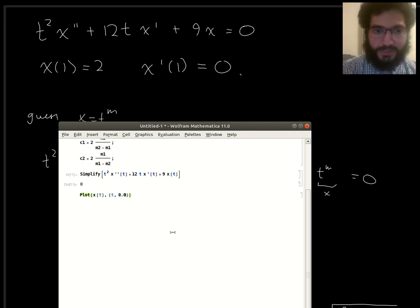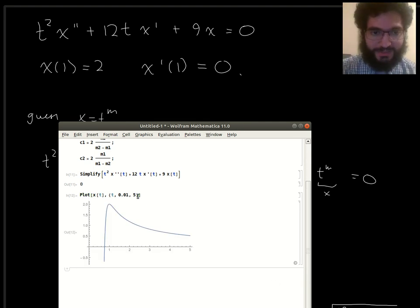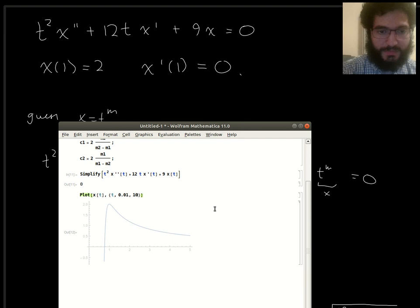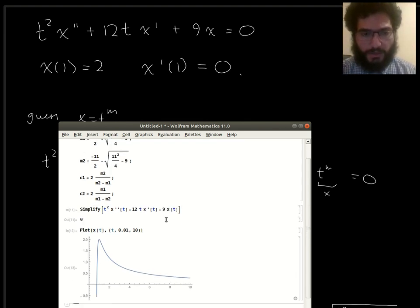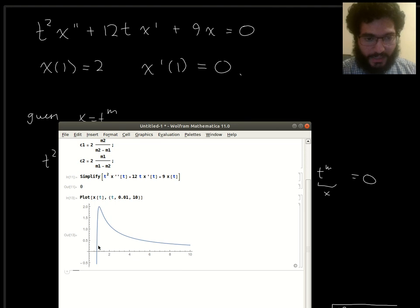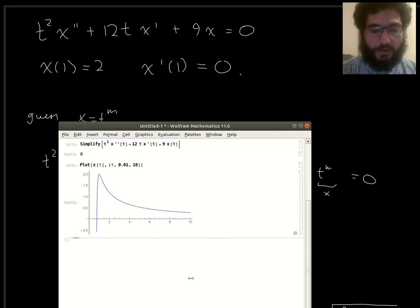So let's do t running from 0.01 to 5. OK, cool. 10. Yeah, so that's interesting that it's kind of shooting down like that. So I wonder what are m1 and m2?